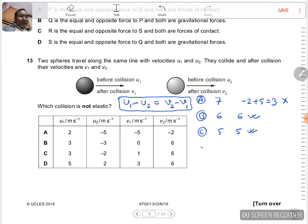And in case D we have 5 minus 2, that's 3, and then 6 minus 3, again 3. This is also elastic collision.